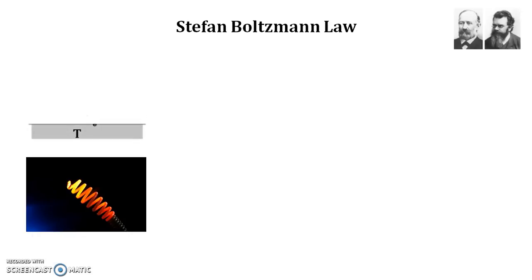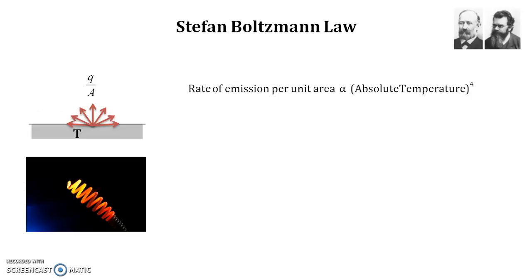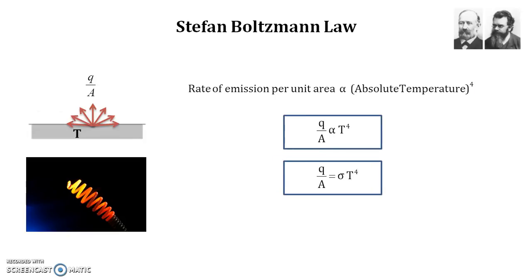The last law is the Stefan-Boltzmann law. If a surface is at an absolute temperature T, it will emit thermal radiation, and the maximum rate of emission is proportional to the area and the fourth power of the absolute temperature. Stefan-Boltzmann law states that the emissive power — the rate of heat emission per unit area — is directly proportional to T to the fourth power. Written mathematically: Q/A = σT⁴, where σ is the Stefan-Boltzmann constant with a value of 5.67 × 10⁻⁸.